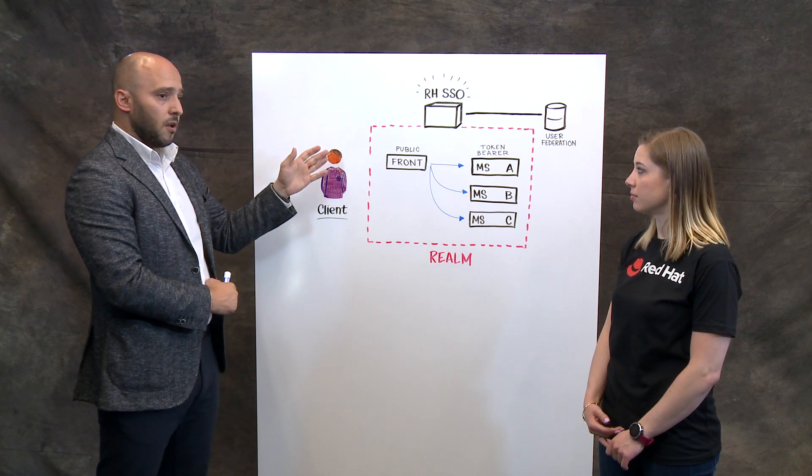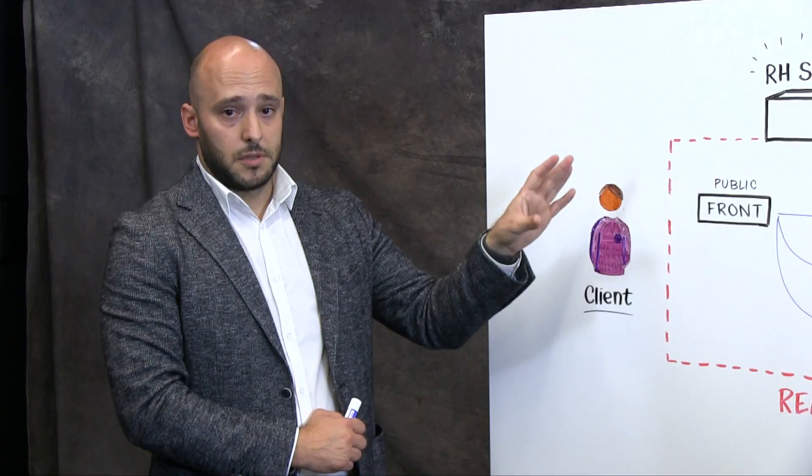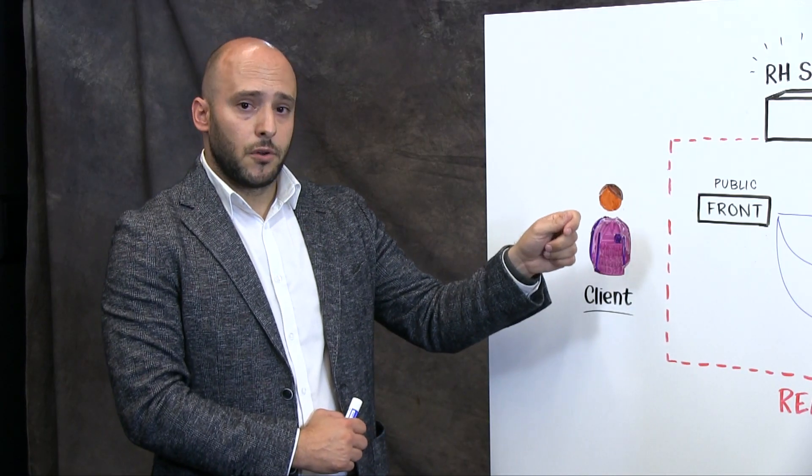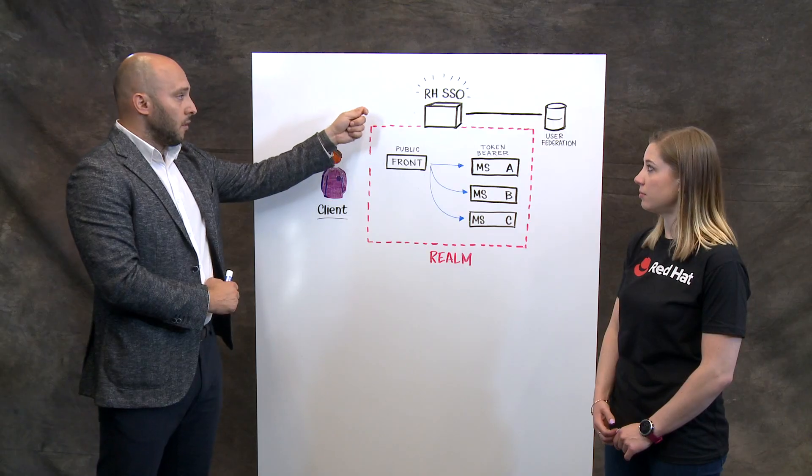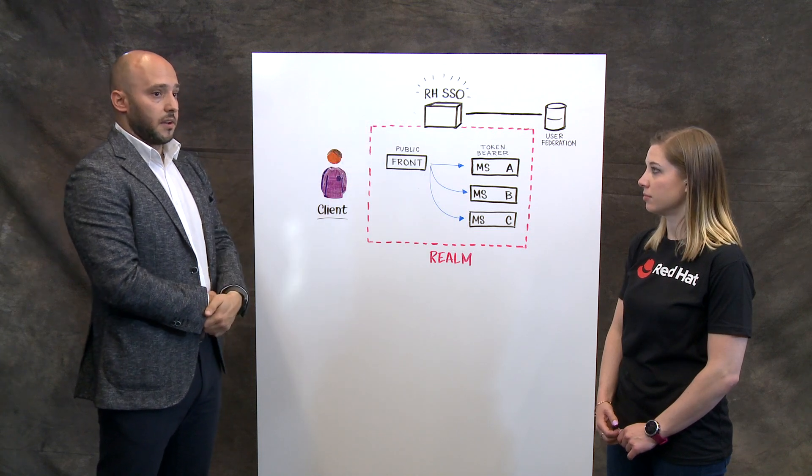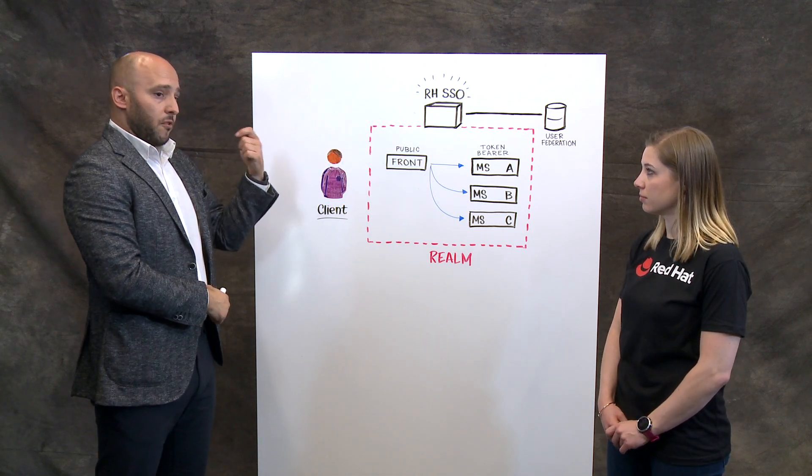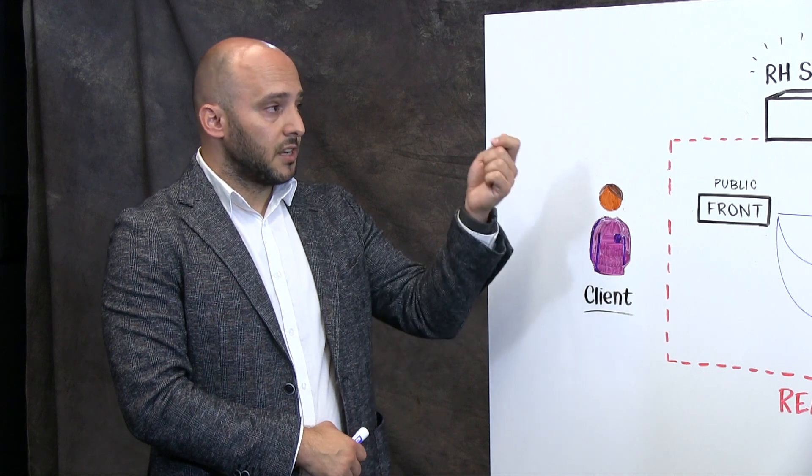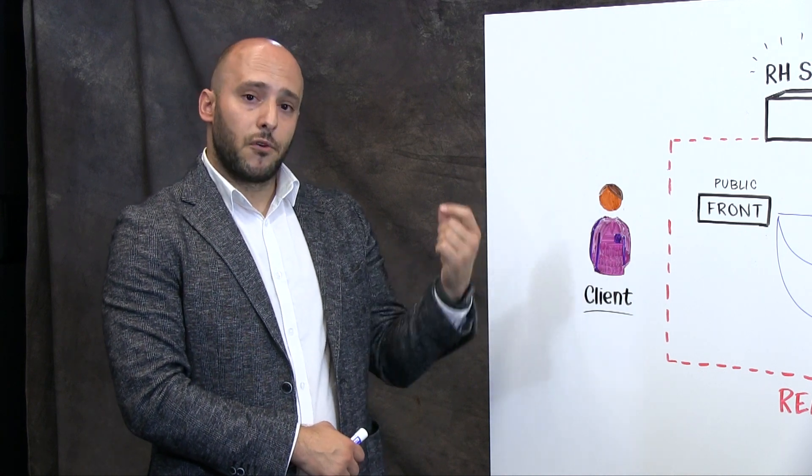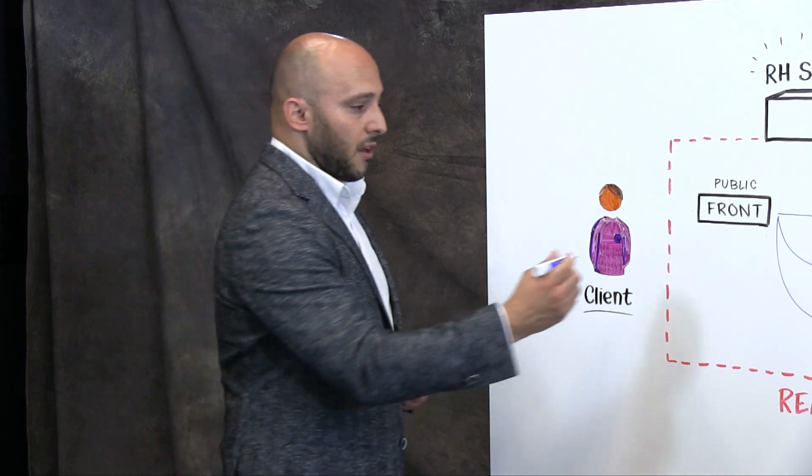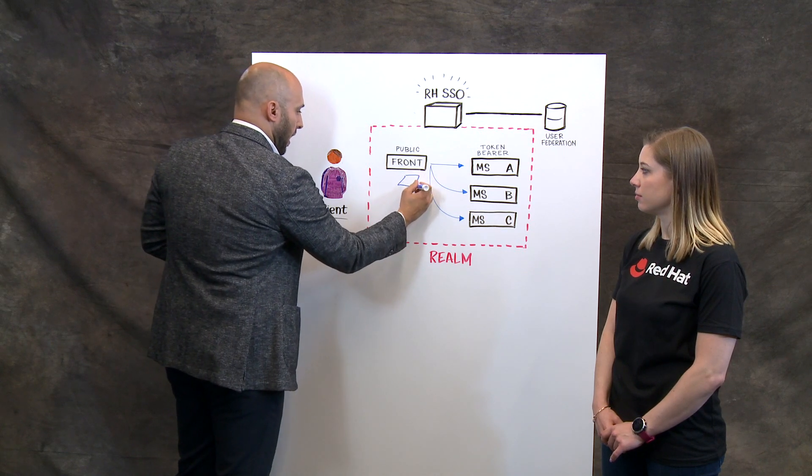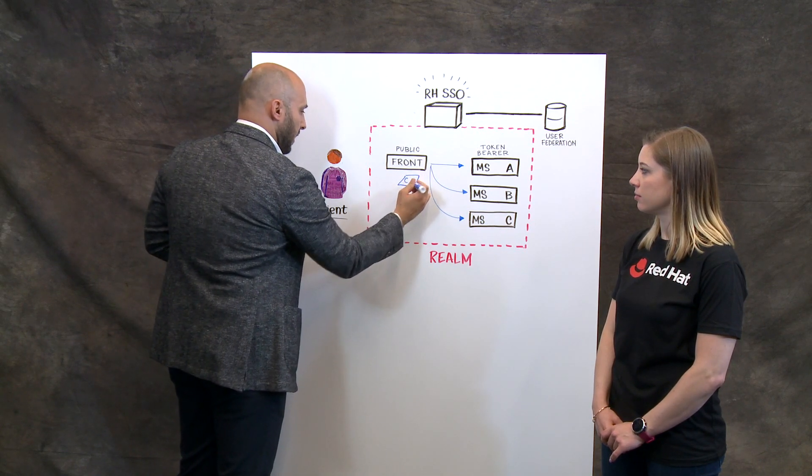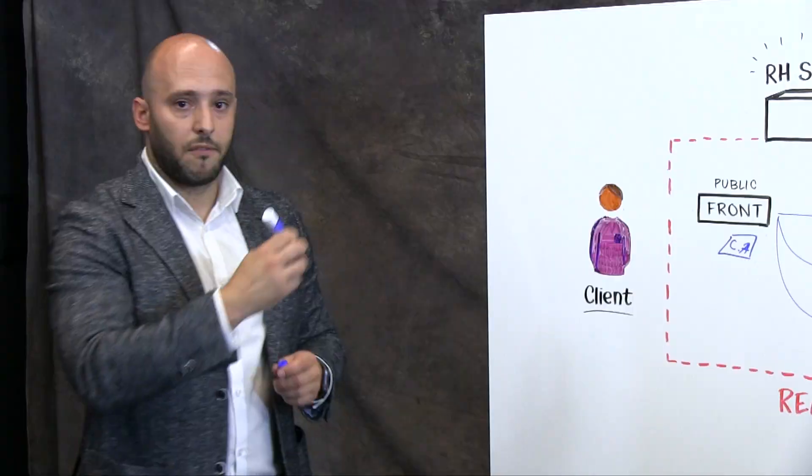After we define which are the components that need security, we need to register the client in the Red Hat Single Sign-On. Once we provide this registration, the Single Sign-On will give us configuration that will be applied through a client adapter, a library that goes in every one of the services.